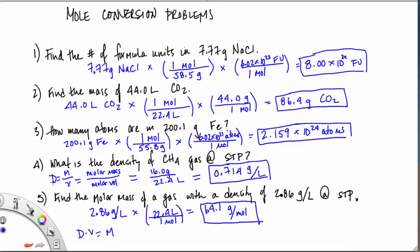When you do these problems, you can double-check that they're set up correctly before doing calculations by making sure your units cancel. Looking at the last conversion factor: the denominator has moles, and moles in the numerator cancel. Grams is in the denominator, and grams is in the numerator. So the units cancel, and we're left with formula units in the numerator of our last conversion factor — which is the unit we need.